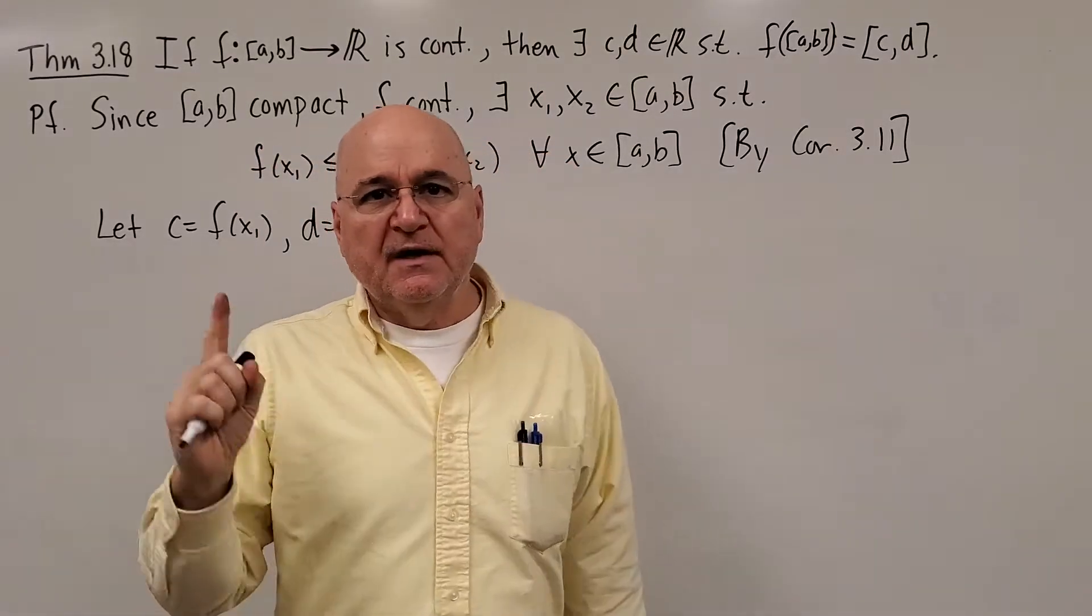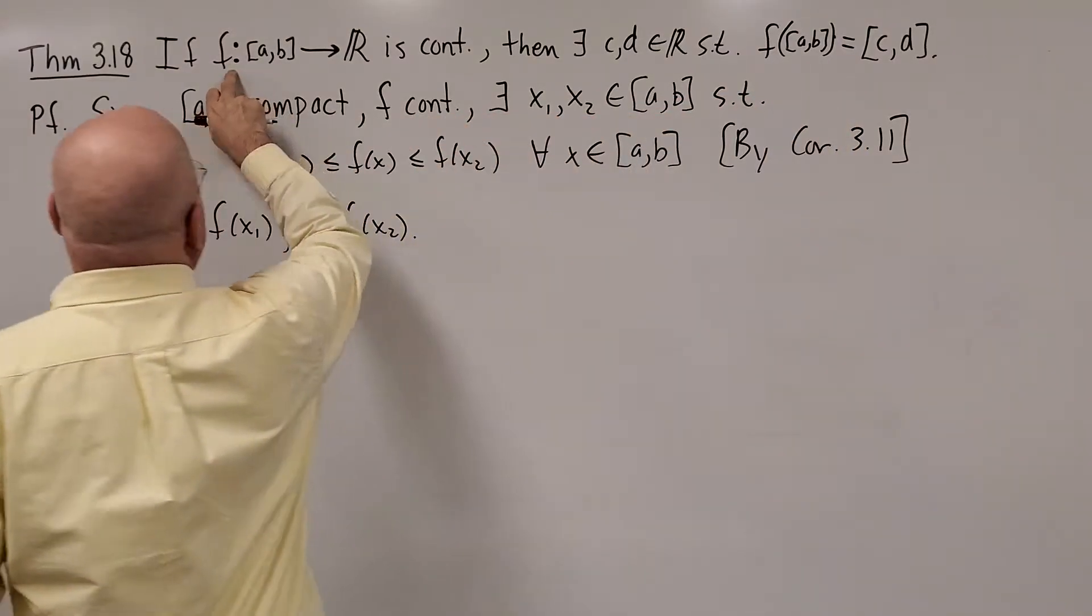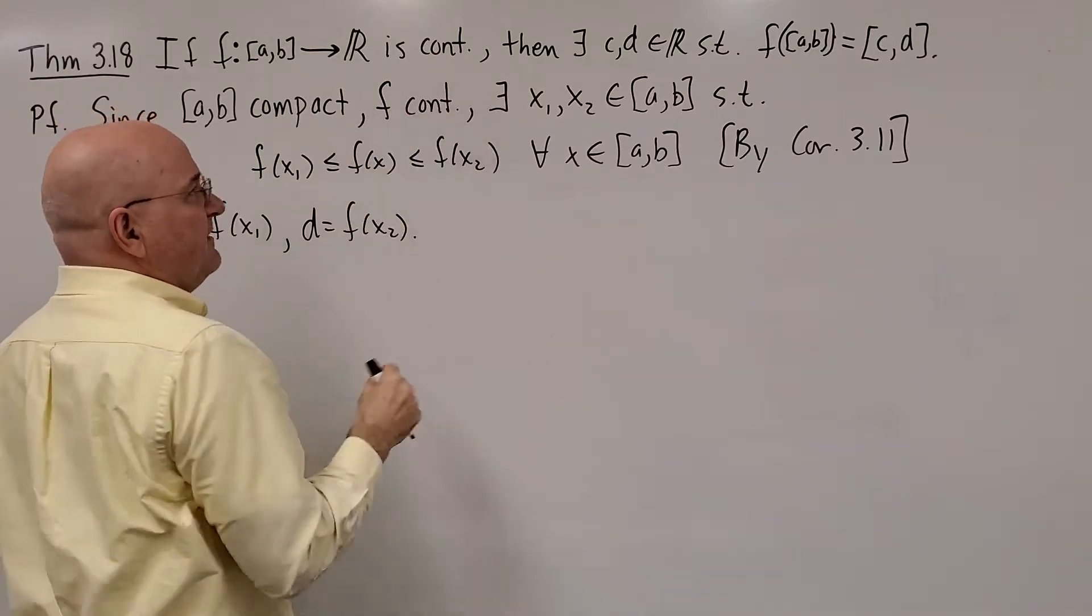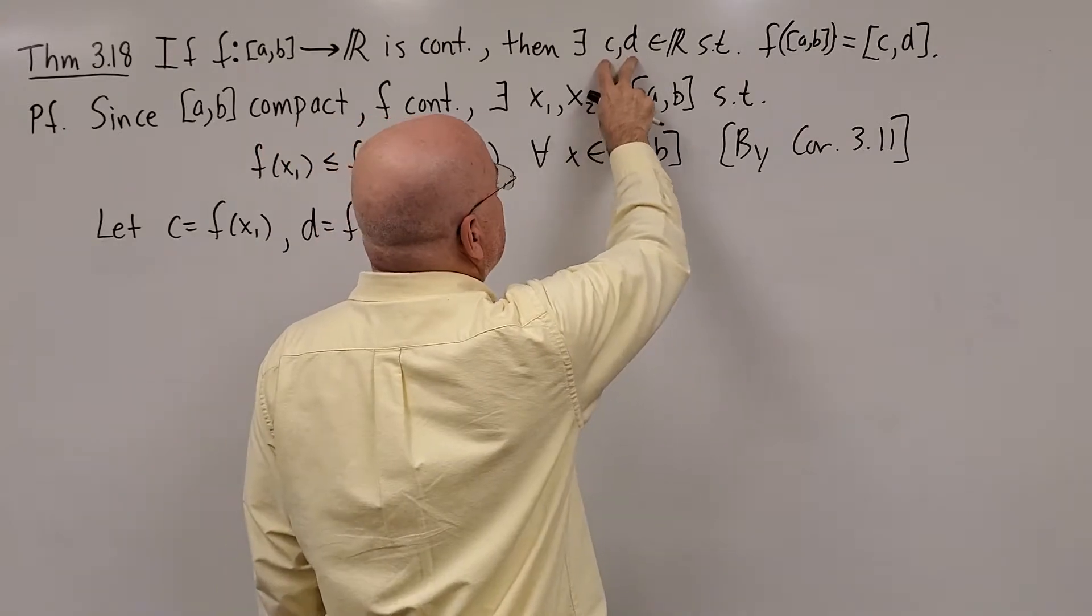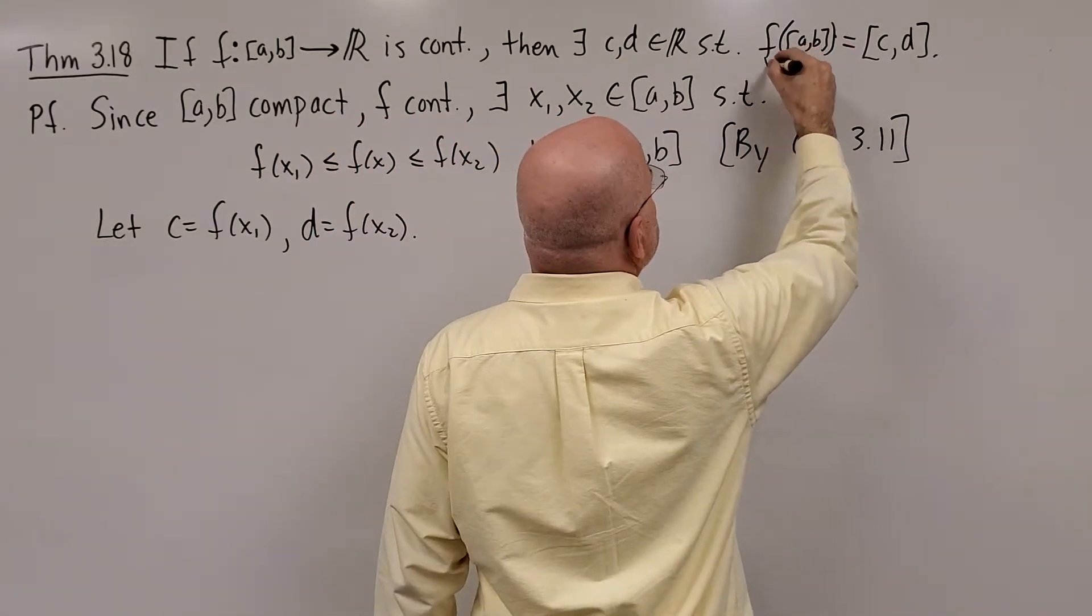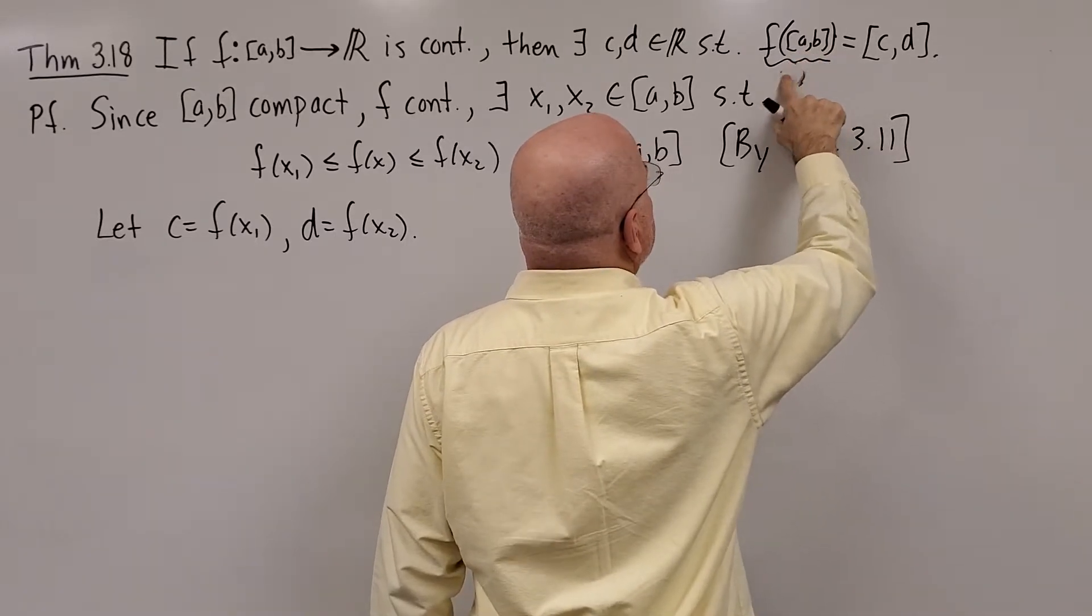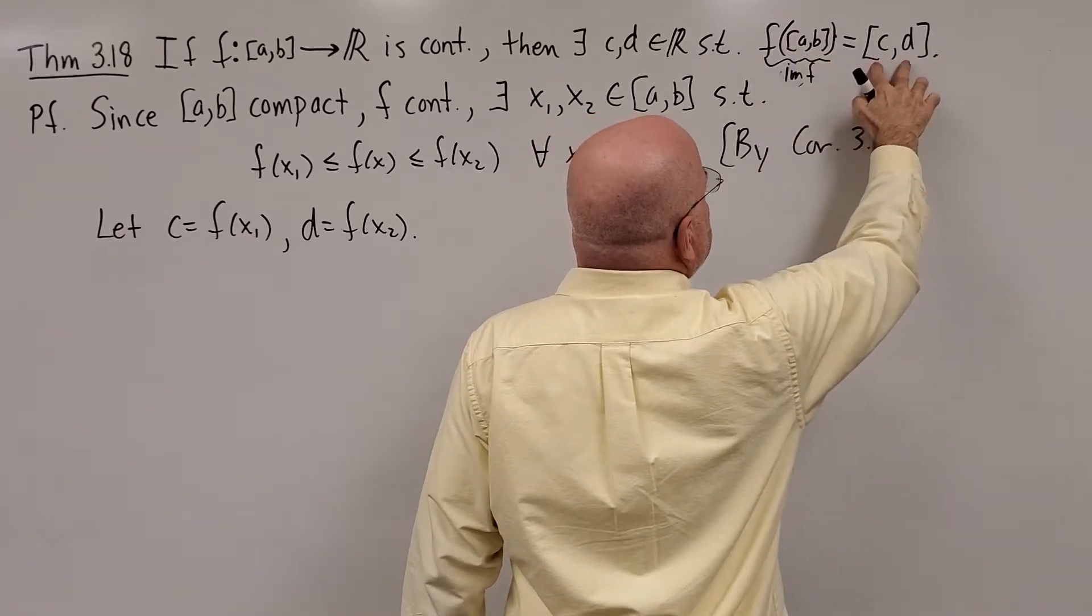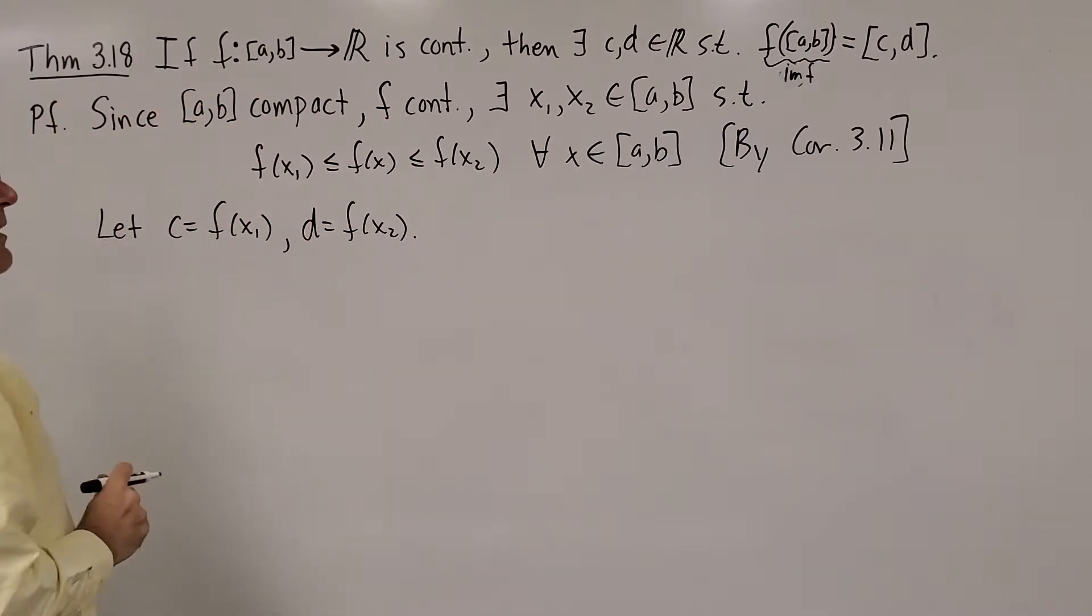The statement of the theorem is as follows: if F from the closed interval A to B into R is continuous, then there exist two numbers on the real line, C and D, such that F of [A,B], and remember what that is, this is the image of F, another way of saying it, is going to be equal to this closed and bounded interval.